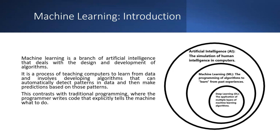AI is the main bigger circle, representing the simulation of human intelligence in computers. Machine learning is more about programming algorithms to learn from past experience. Deep learning involves multiple layers — the more layers, the more accurate the results. It is a branch of AI focused on the design and development of algorithms that teach computers to learn from data.